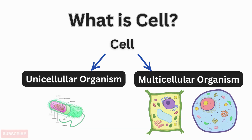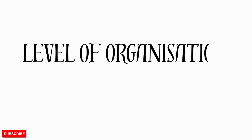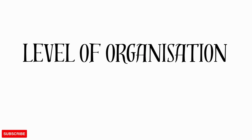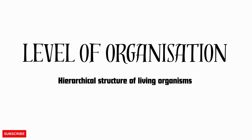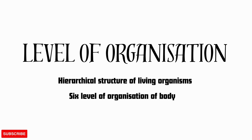Here we look at different levels of organization of a multicellular organism like a human. The levels of organization in the body refer to the hierarchical structure of living organisms — how the body is organized and works. Here we look at six levels of organization.